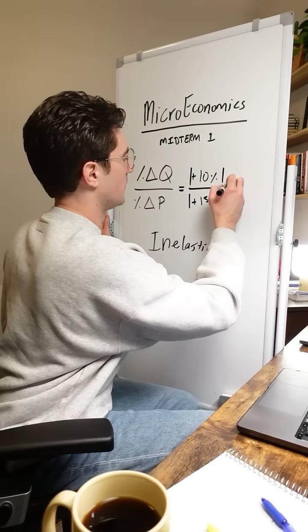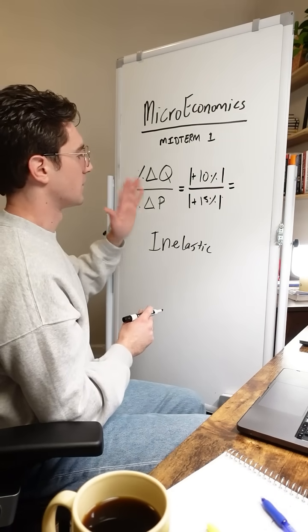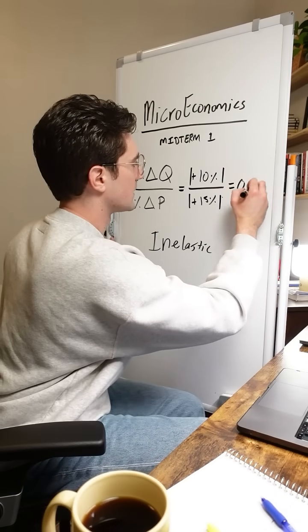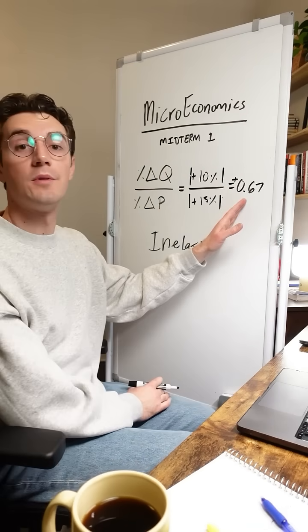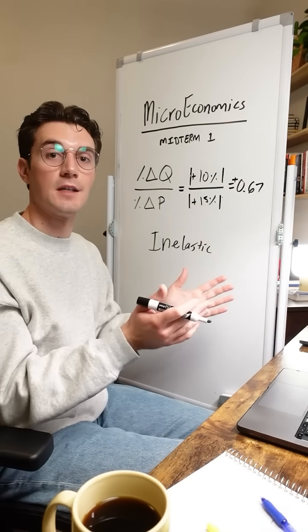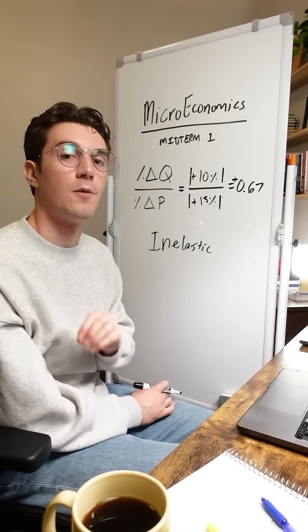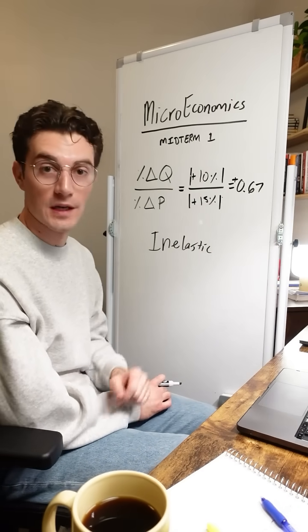All right. If we wanted to solve this out real quick, we could get a price elasticity of supply value of 0.67. 10 divided by 15 is actually plus 0.67. Notice that with demand, it was negative. That's expected because the demand curve is downward sloping and the supply curve is upward sloping.